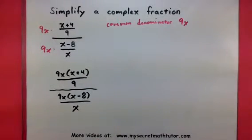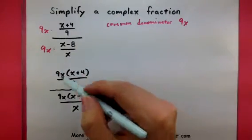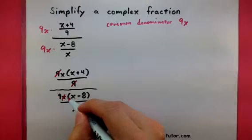you'll notice that a few things can cancel out. For example, in the top here, these 9s will now get rid of each other. And in the bottom, I have a couple of x's that will cancel out.